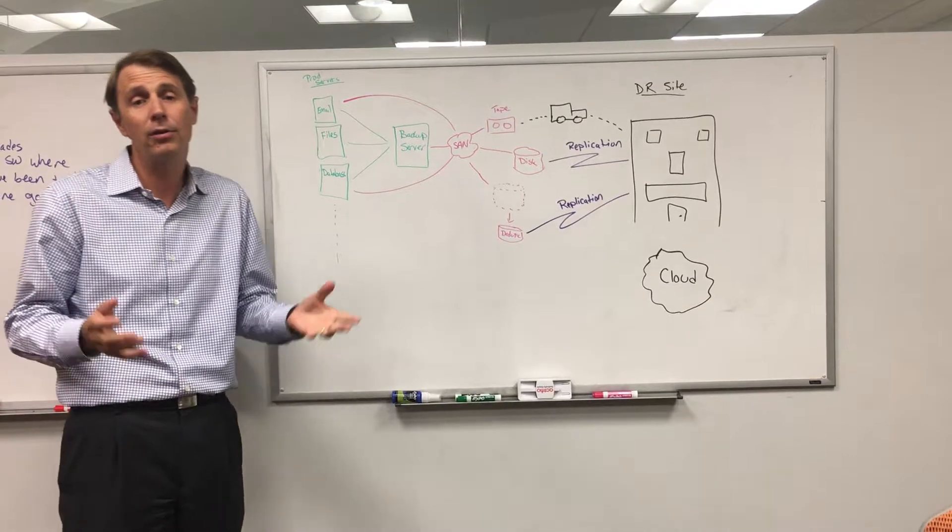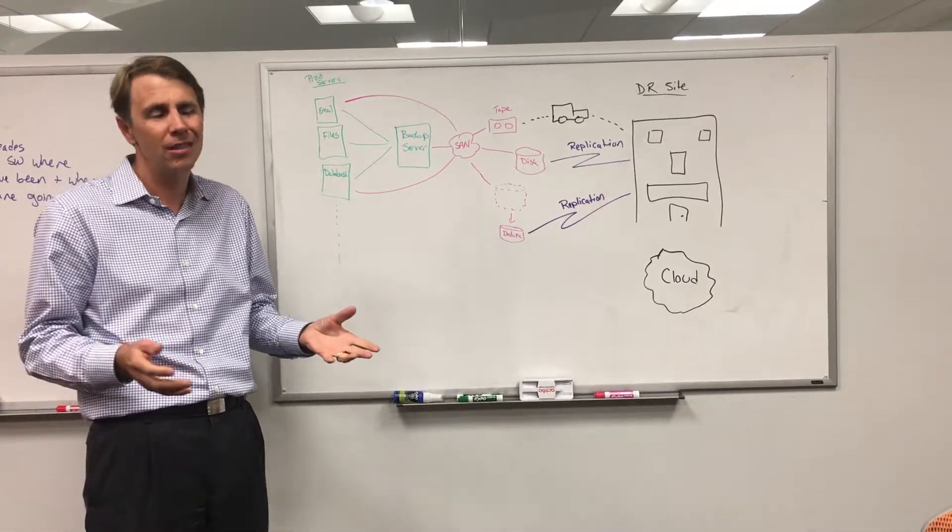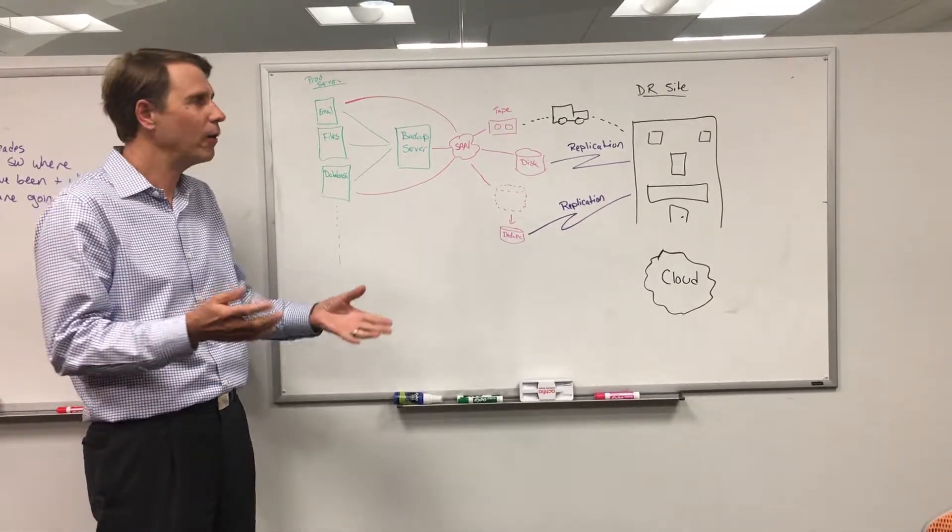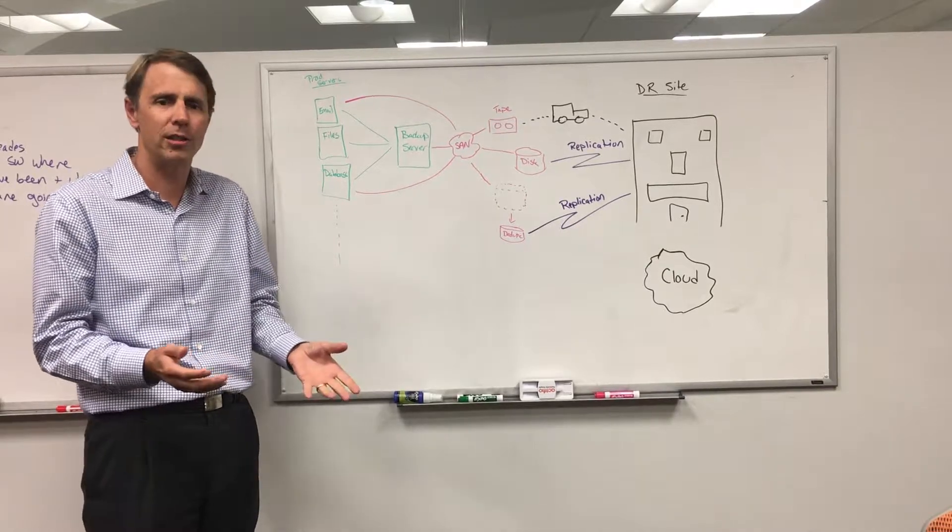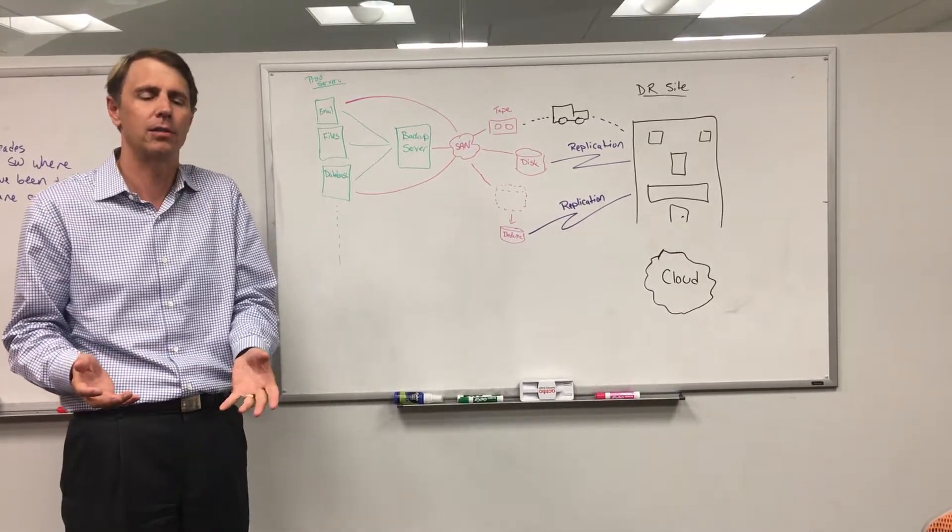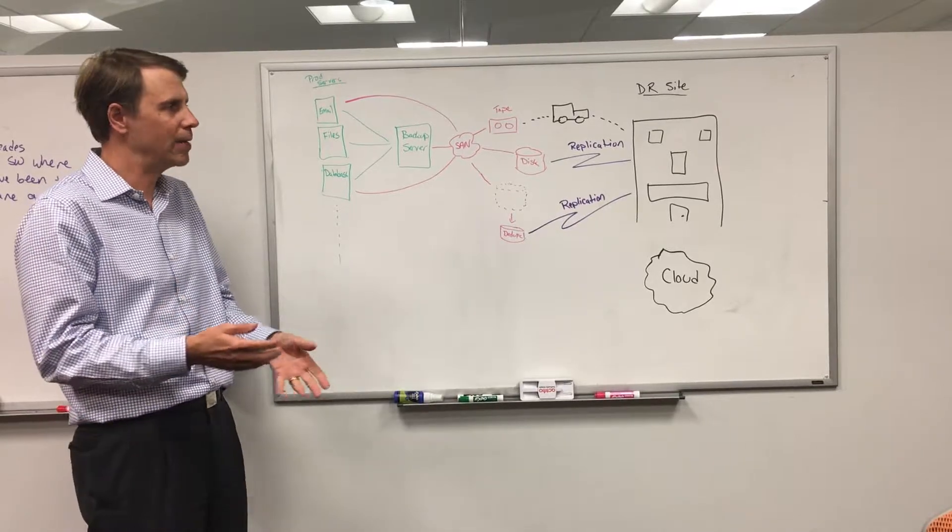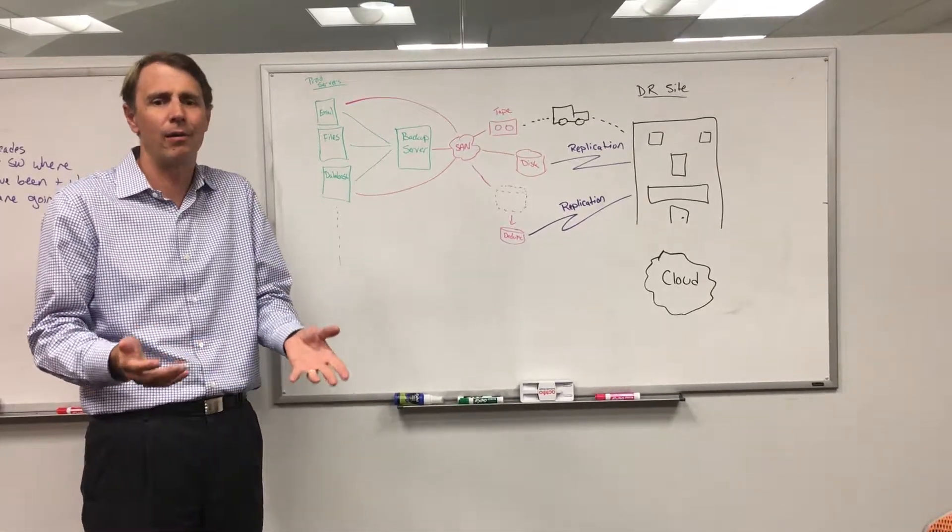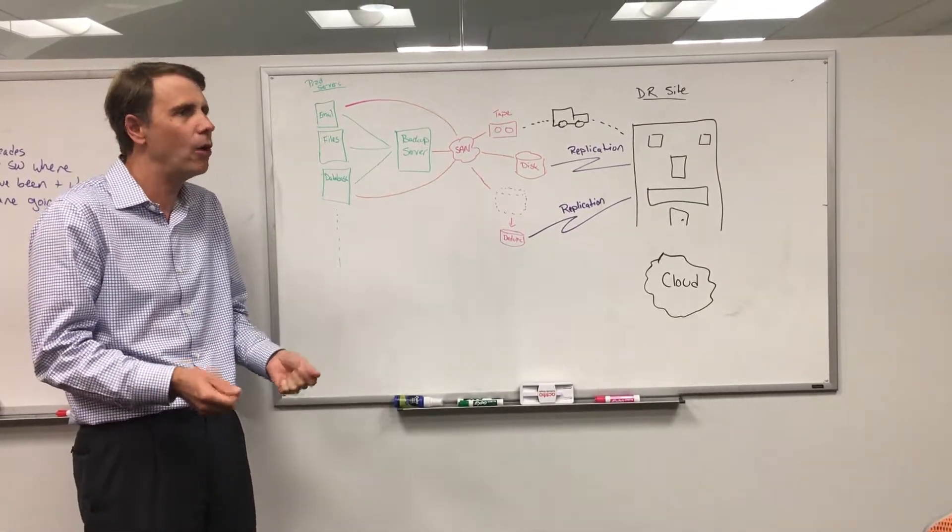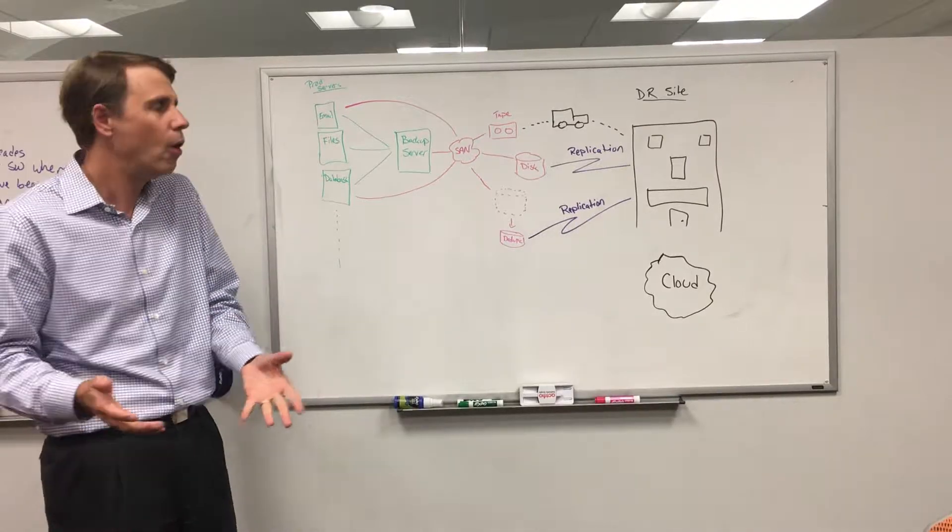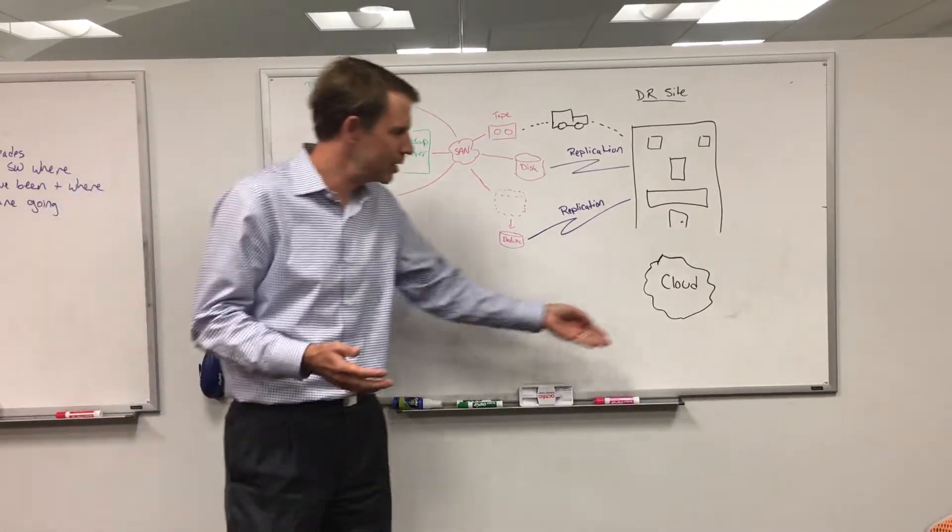So as you think about data protection and the evolution, it's really a question of how can you make backups more efficient, but also how can you make recoveries more efficient? And there's certainly many different ways to do that. Some new technologies to think about are things like incremental forever or instant recovery or the ability to dynamically spin up instances in the cloud based off of protected copies...